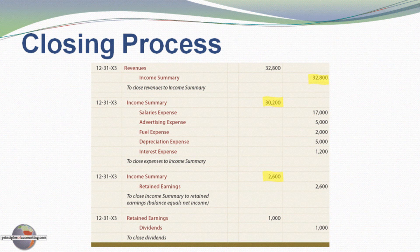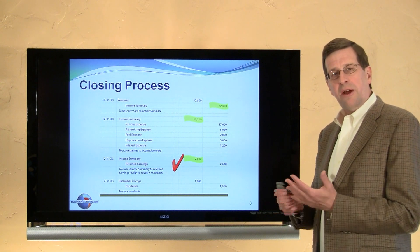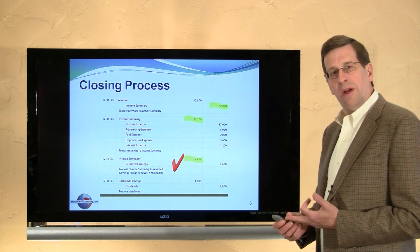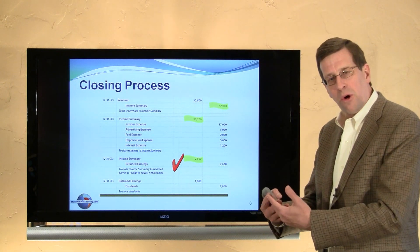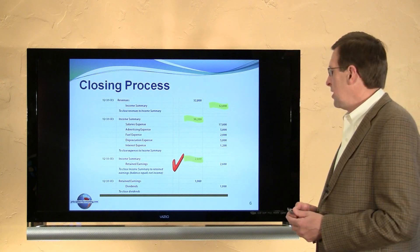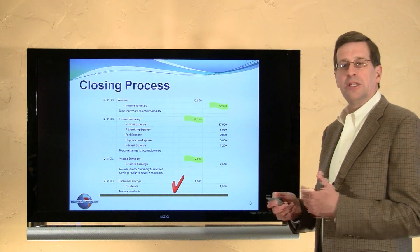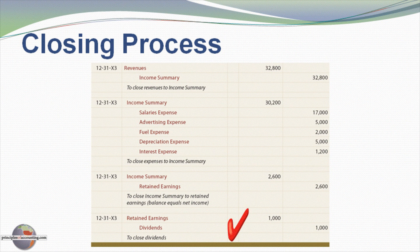That $2,600 is what is closed out to retained earnings. Here I'm debiting income summary $2,600 and crediting retained earnings. Notice that this causes the income summary account to have a zero balance, all expense accounts to have zero balances, and all revenue accounts to have zero balances. The retained earnings account has been brought forward to its current balance reflecting the end-of-year condition. We also need to close the dividends account to retained earnings, since retained earnings over time represents the undistributed earnings of the company. So here I'm crediting dividends to close that temporary account and debiting retained earnings.